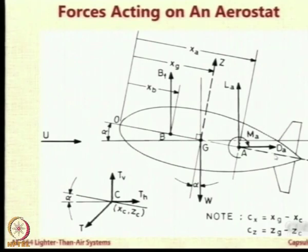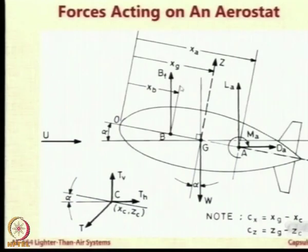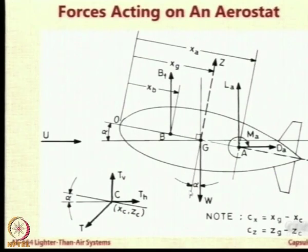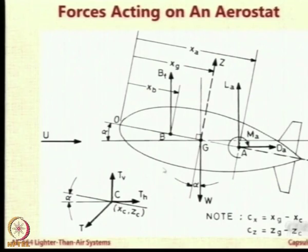Upward is negative and downward is positive because from the center line, down is the positive axis. So you will have negative BF cos theta, negative L_A cos theta, positive D_A sin theta, positive W cos alpha, and negative T_H sin theta and negative T_V cos theta. With this, please get the expressions for the two forces. The moments are to be taken along the X direction and normal to it — along X you will have F_AX, and vertical will be F_AZ.